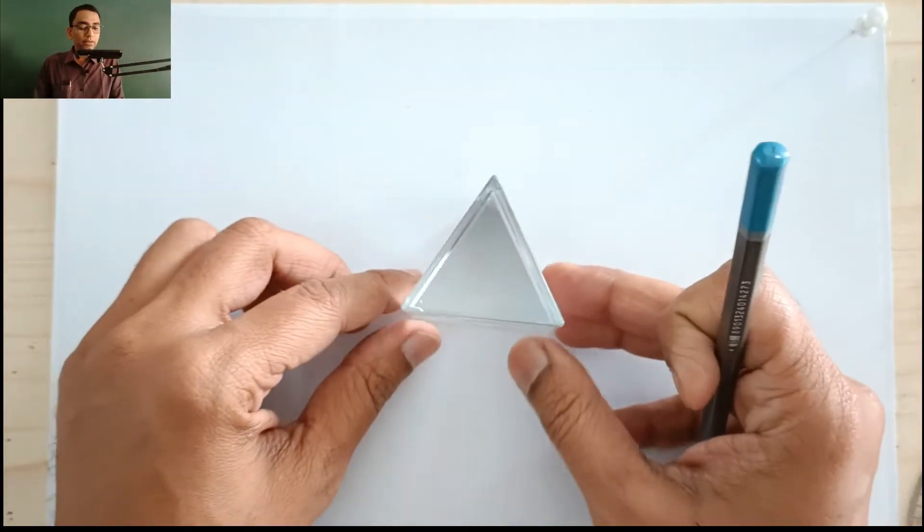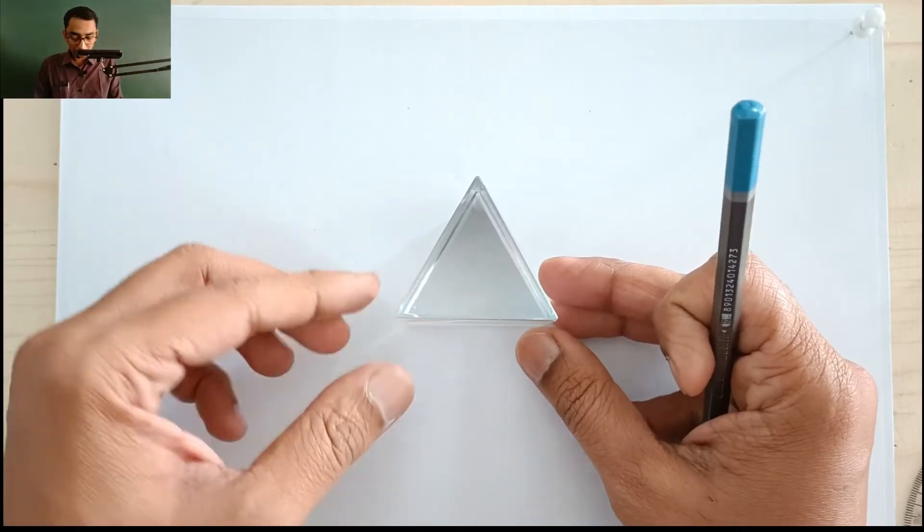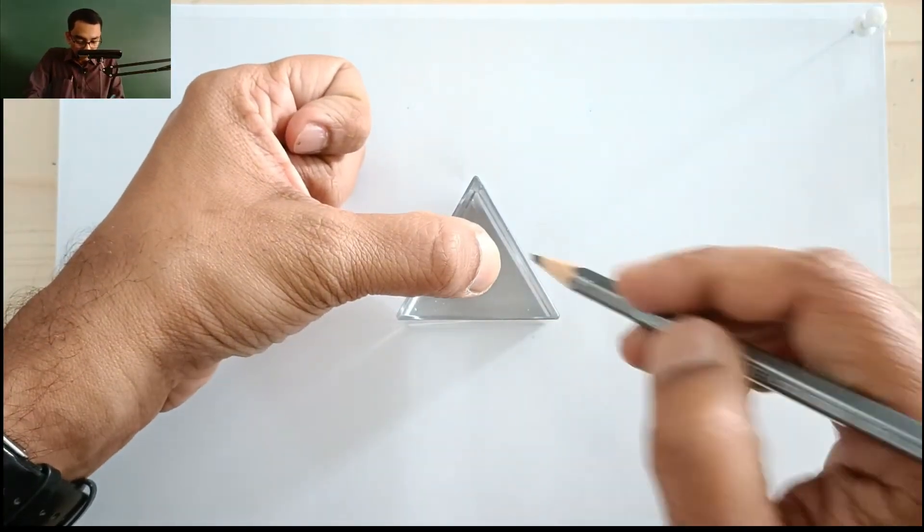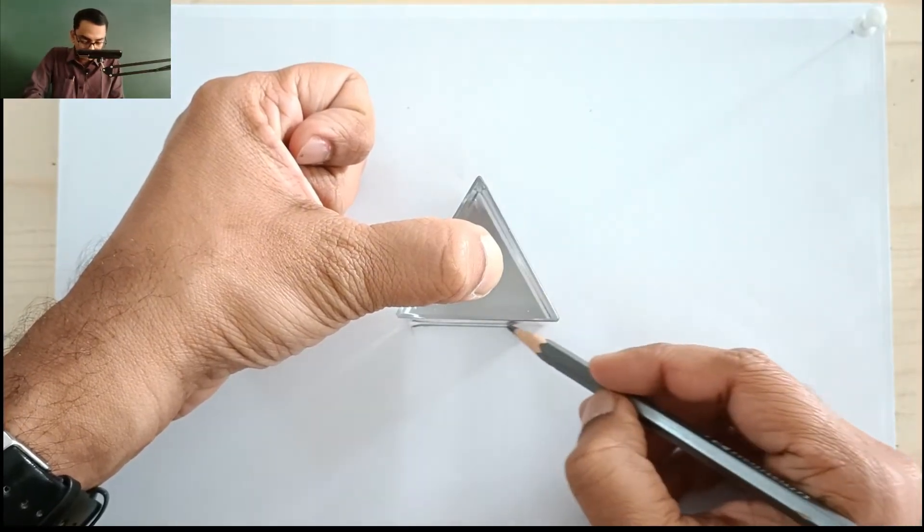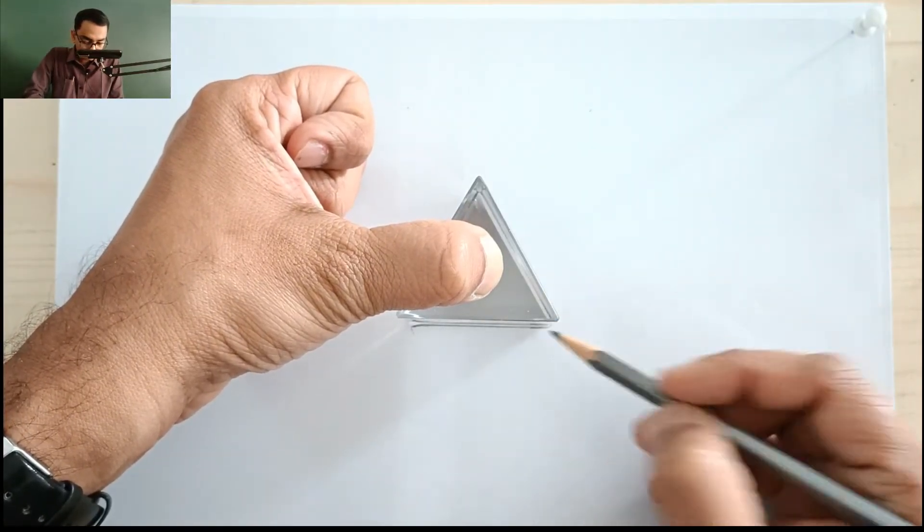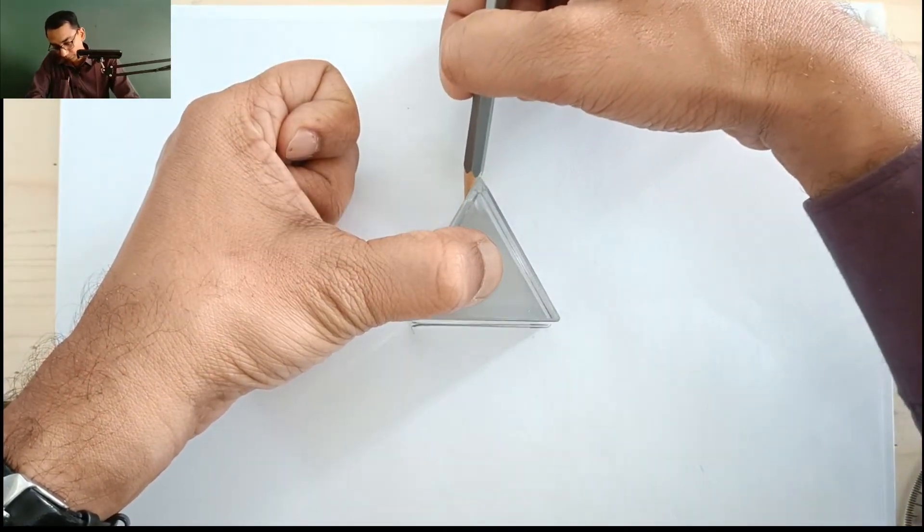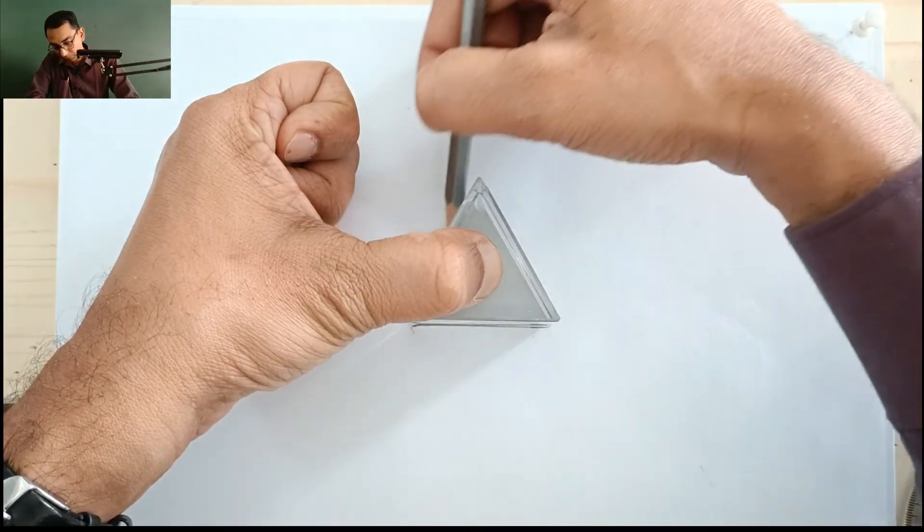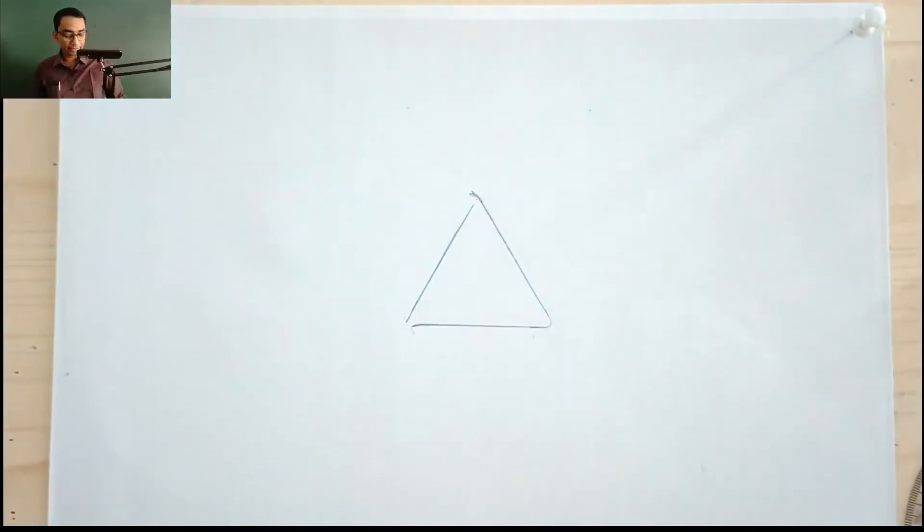And this A4 size paper is well attached on this wooden board. So now we are going to take the prism and we are going to place it exactly at the center of the A4 size paper. We are going to press it with our thumb and we are going to outmark it like this.